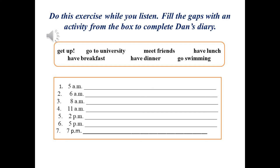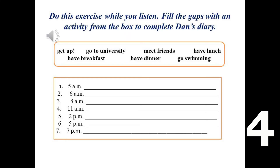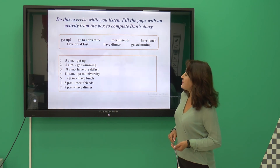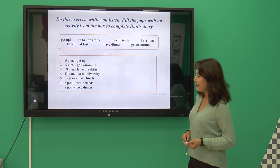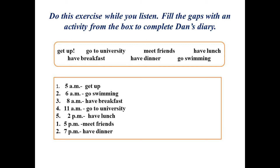Now let's do one more exercise while you listen: fill in the gaps with an activity from the box to complete Dan's diary. At 5 a.m. he gets up. At 6 a.m. he goes swimming. At 8 a.m. he has breakfast. At 11 a.m. he goes to university. At 2 p.m. he has lunch. At 5 p.m. he meets friends. At 7 p.m. he has dinner.